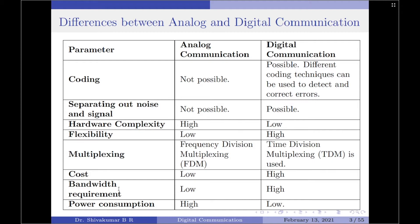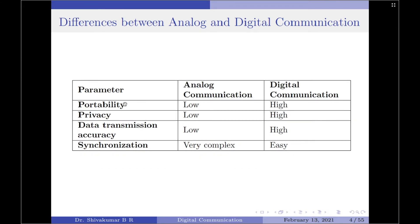The next parameter is bandwidth requirement. Analog communication systems require low bandwidth whereas digital communication systems require very high bandwidth. Next we have power consumption as a parameter. Analog communication systems consume high power, whereas digital communication systems consume considerably low power.